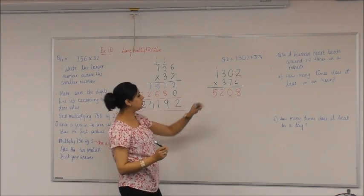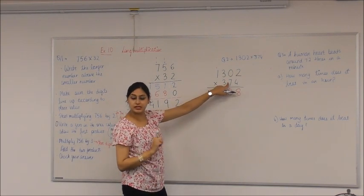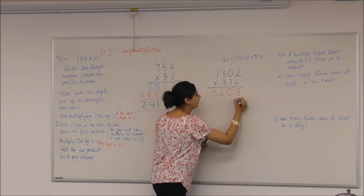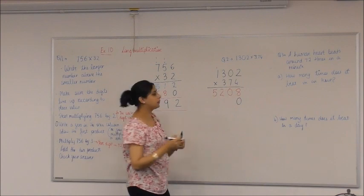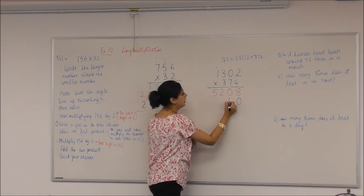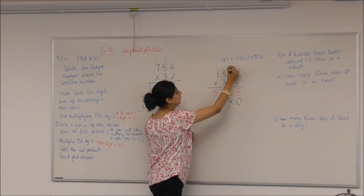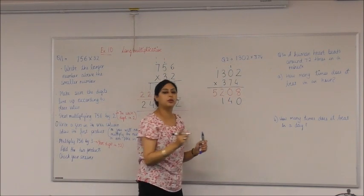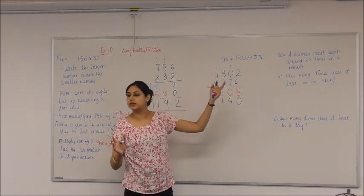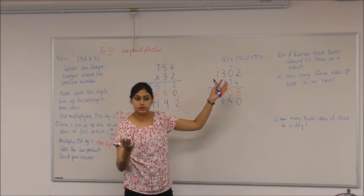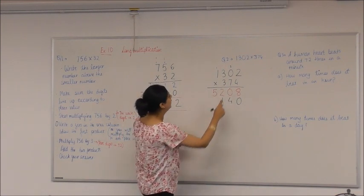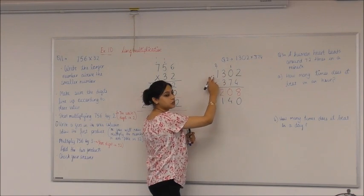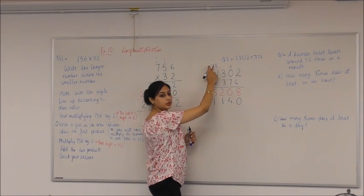Now the next step is I need to multiply it by 7, but it's in the tens place. So what do I write in the units place? 0. Well done. Then short multiplication again. 7 times 2? 14. 7 times 0? 0. Plus 1? 1. Please do not make the mistake of writing 7 times 0 is 7. Anything times by 0 is 0. And then plus 1. So 7 times 3? 21. 7 times 1? 7. Plus 2? 9. Well done.